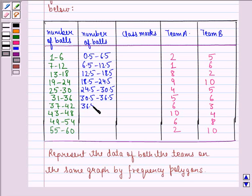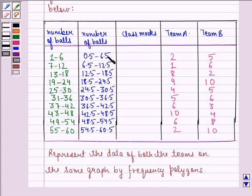Now this we do because we know that if the intervals are not continuous then we subtract 0.5 from the lower limit and we add 0.5 to the upper limit in every interval so that the intervals thus obtained would be continuous.